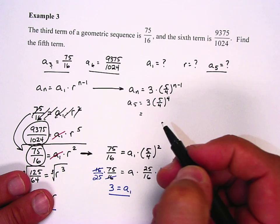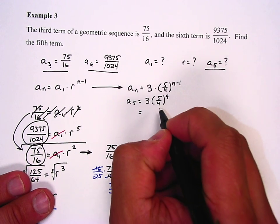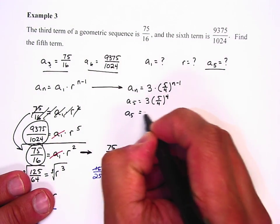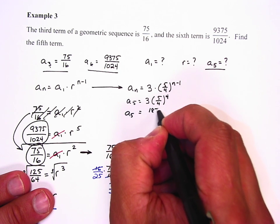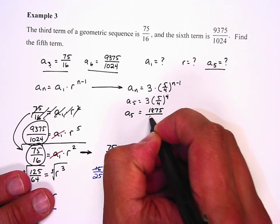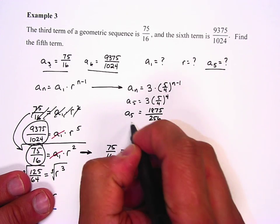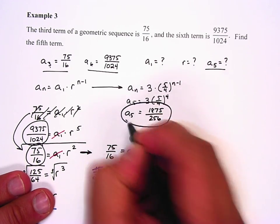If I plug that all into my calculator, I get a sub 5 equals 1875 over 256, and right there is my fifth term.